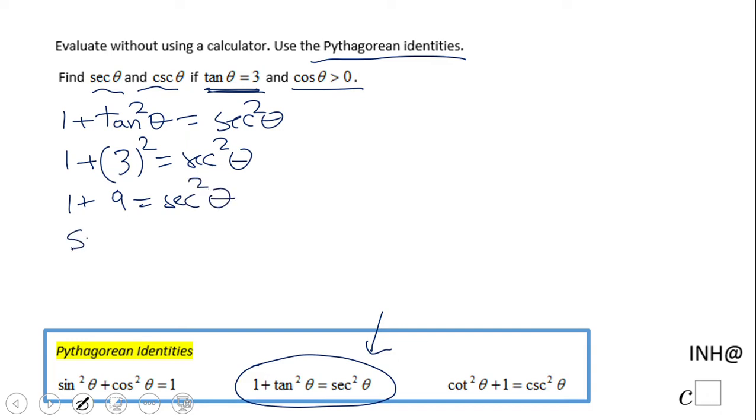Secant squared equals 10, which gives us secant is square root of 10, but don't forget to put a plus and minus. Now let's think about which one we are using: the positive square root of 10 or negative square root of 10.